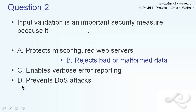And 'prevents denial-of-service attacks' — well, DoS attacks don't really happen through a form. You're going to block those with your firewall, your IDS, or IPS solution. So the correct answer to question two is B: rejects bad or malformed data.